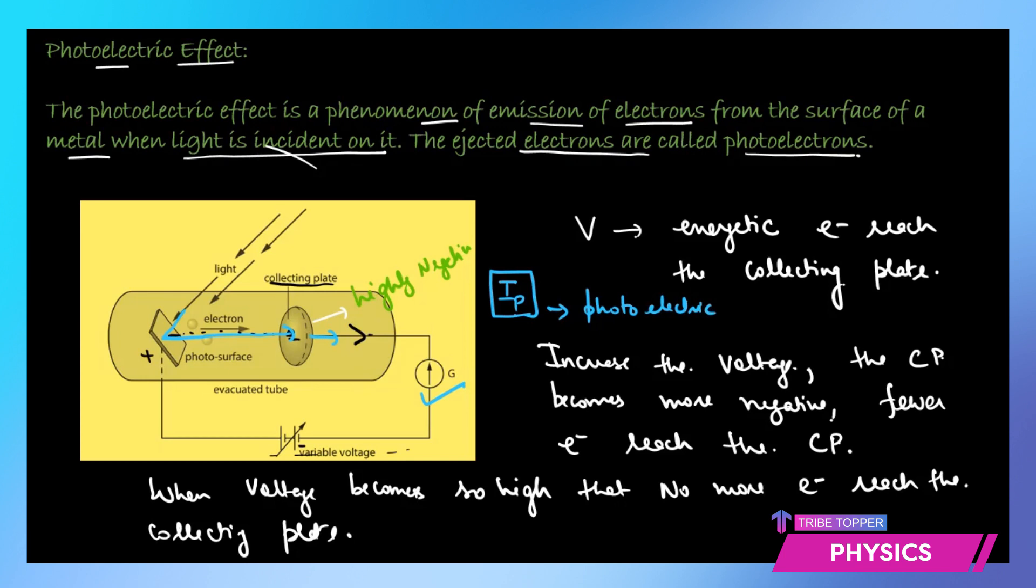When you go on increasing the negative voltage, this photoelectric current goes on decreasing. When the voltage becomes so high that no more electrons reach the collecting plate, at that point of time, the photoelectric current also becomes zero. And at this stage, whatever is the voltage, we call it as the stopping voltage. The name suggests because it stops the photoelectric current. That is known as stopping voltage, which we denote by Vs.